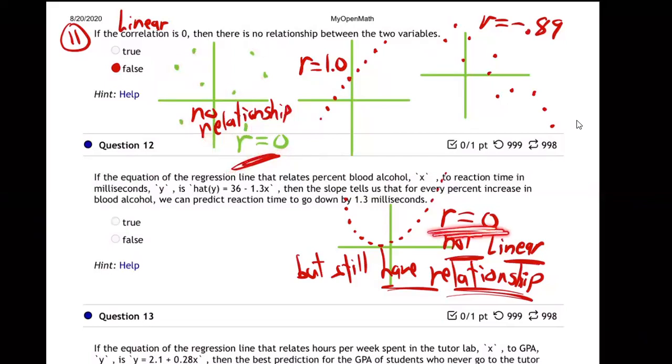But in this case, R is also zero, and the dots have a very definite relationship. It's just a curved relationship, not a linear relationship. So R - remember, that's why I keep writing linear correlation coefficient -